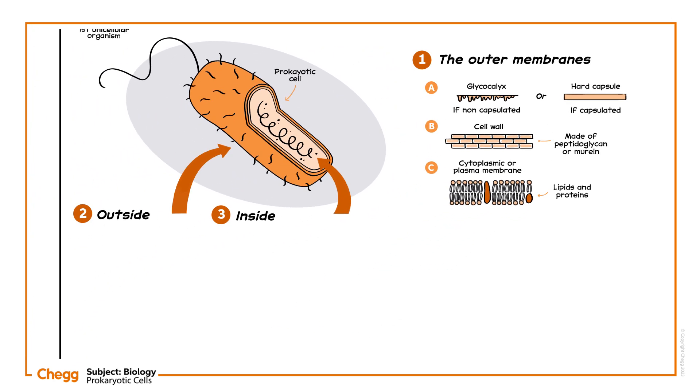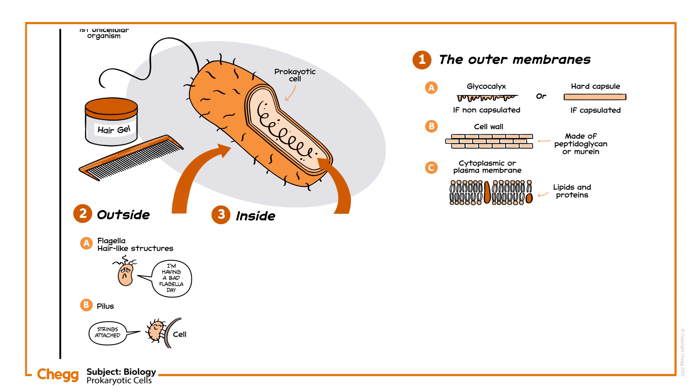Moving on to structures outside the membranes, we have flagella and pilus. Flagella are microscopic structures, similar to hair. Made from the protein flagellin, they help bacteria to get around. Pili are appendages that help prokaryotes attach to other cells and colonize them.